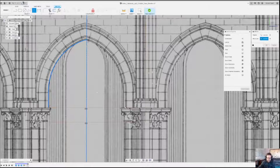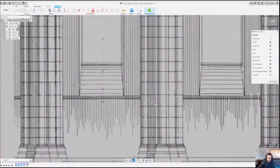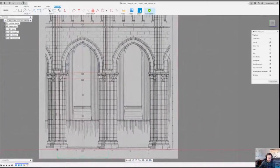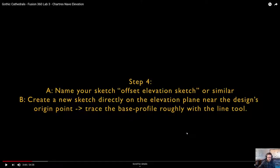To make this even faster, we're just going to mirror the other side. Now we're going to name the sketch the 'offset elevation sketch' or something similar. This is going to help you — there are a lot of sketches in this tutorial, so naming will really help you find things later.